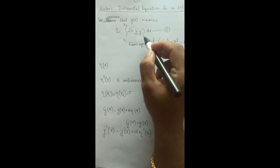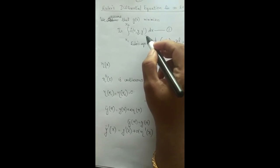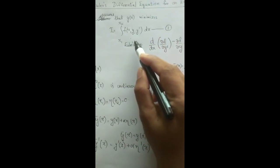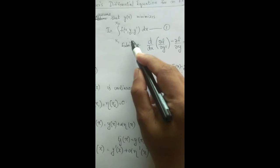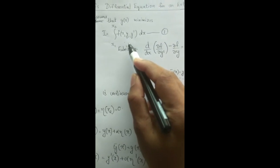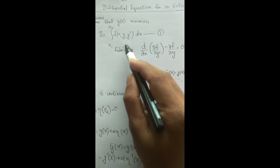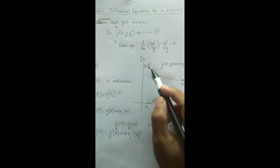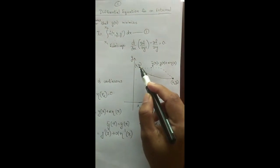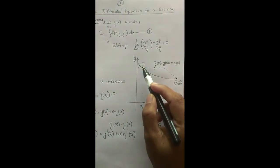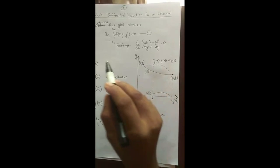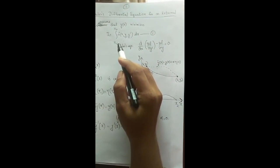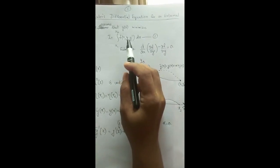We assume that there exists an admissible function y(x) that minimizes the integral I = integral from x1 to x2 of f(x, y, y') dx. That is, y''(x) is continuous and y(x1) = y1, y(x2) = y2. We obtain the required differential equation for y(x) by comparing the values of I that correspond to neighboring admissible functions.